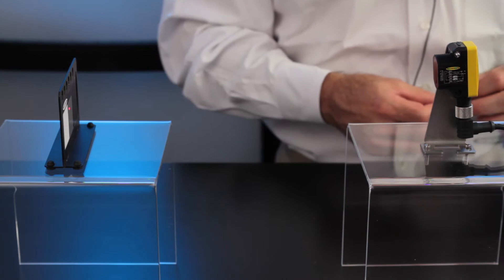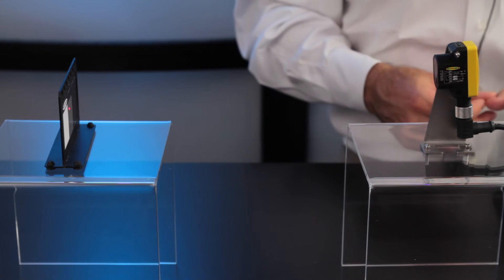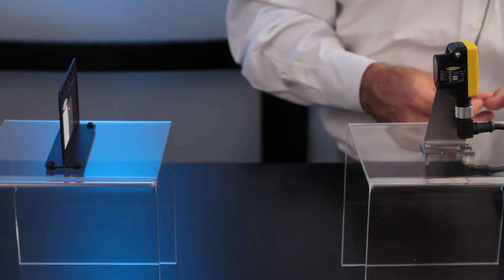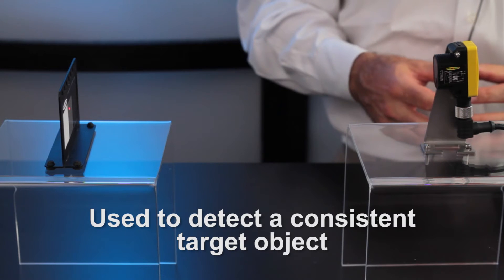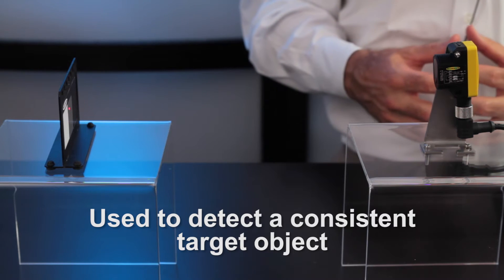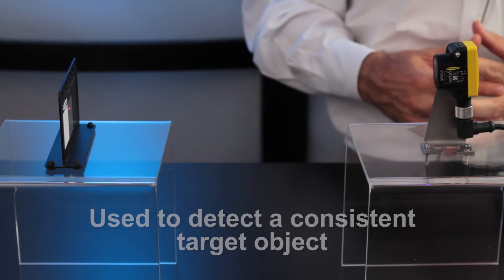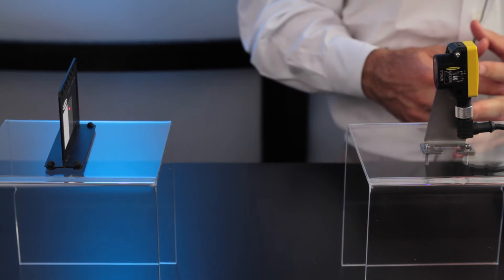In this video we show how to set up the QS30 laser diffuse in a two-point static teach. It's the most commonly used teach method and is used to detect a consistent target object when two conditions can be easily presented.